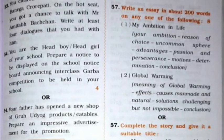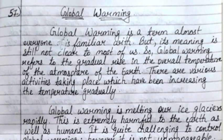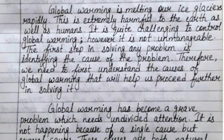Now the second topic of essay is global warming. Global warming is a term almost everyone is familiar with but its meaning is still not clear to most of us. Global warming refers to the gradual rise in the overall temperature of the atmosphere of the earth. There are various activities taking place which have been increasing the temperature gradually. Global warming is melting our ice glaciers rapidly. This is extremely harmful to the earth as well as humans.